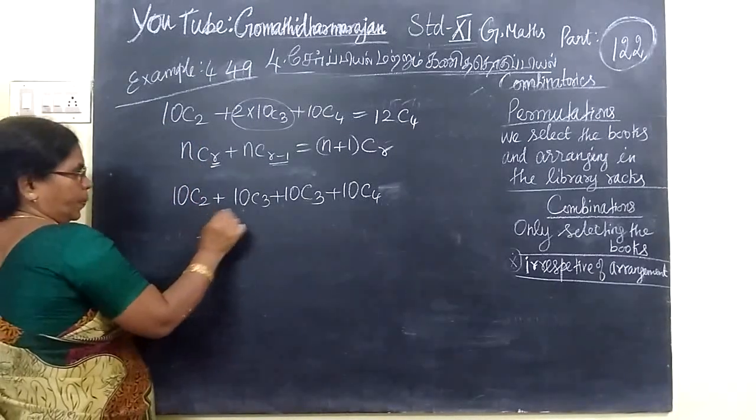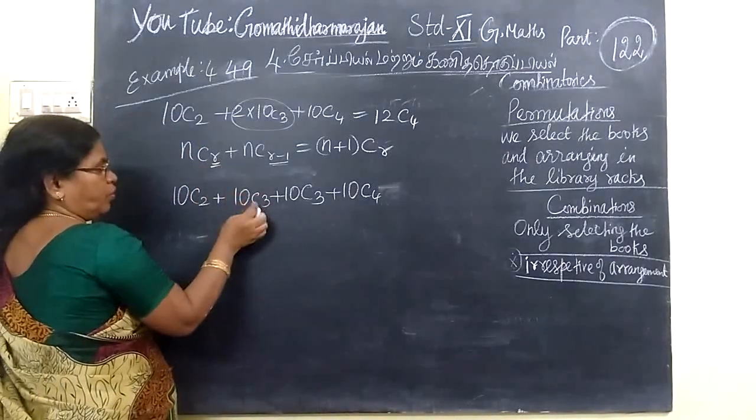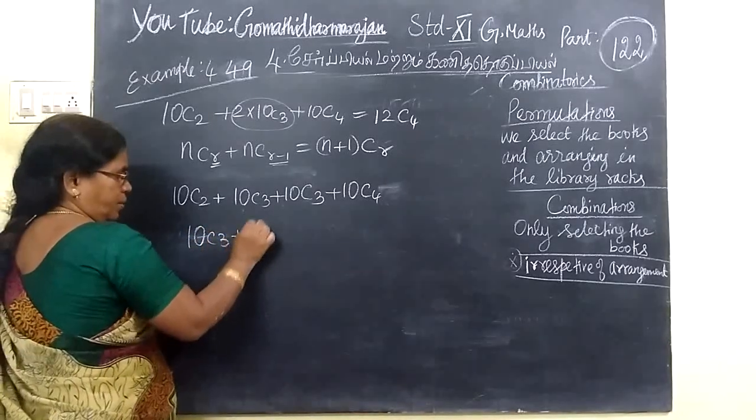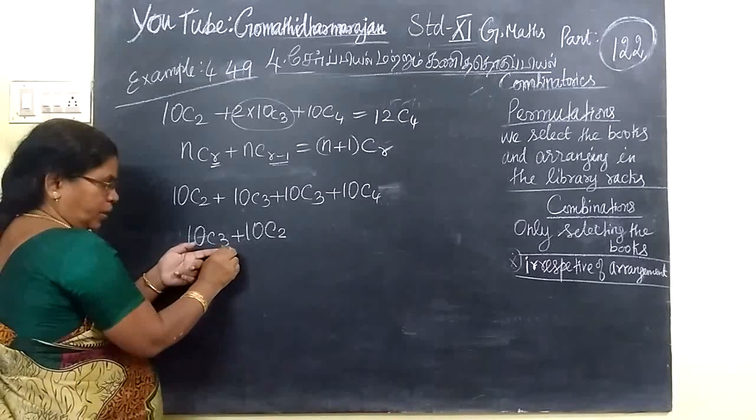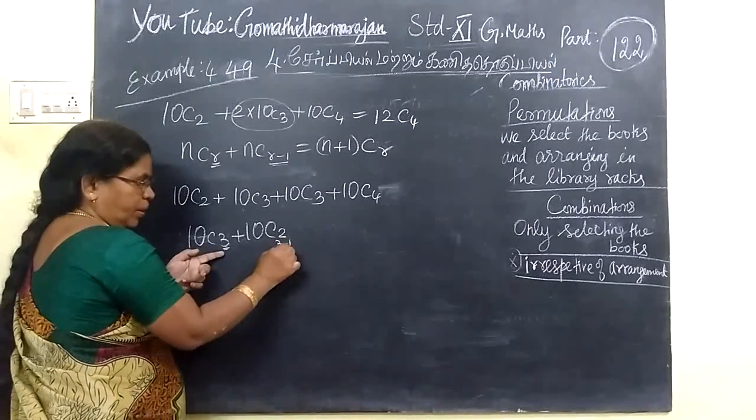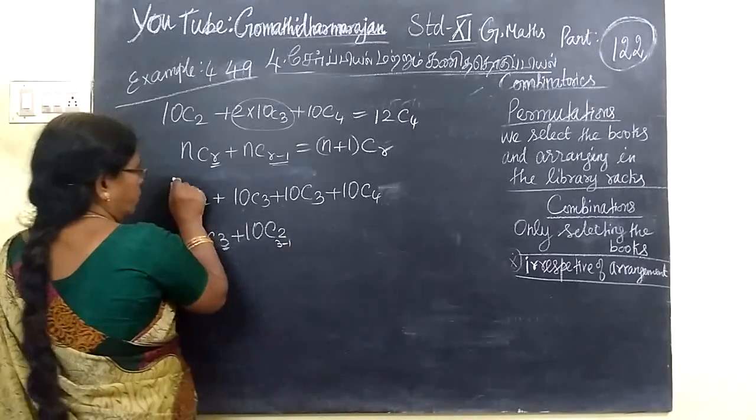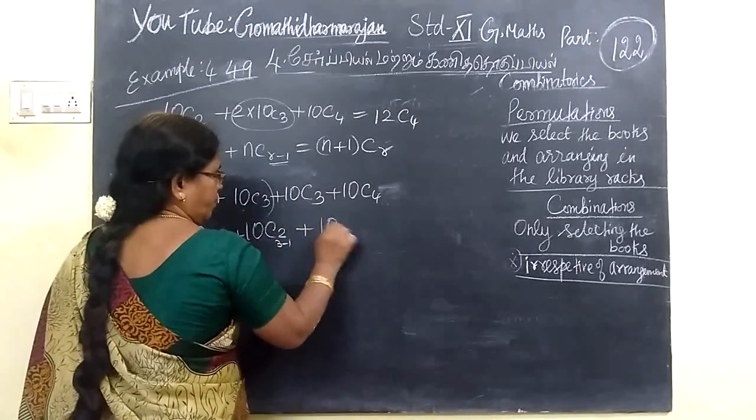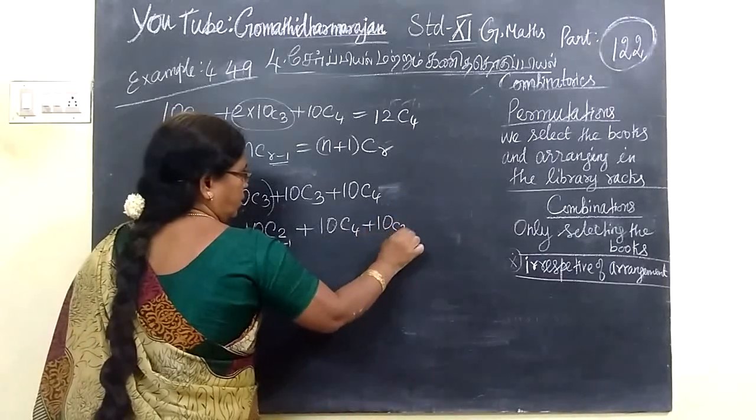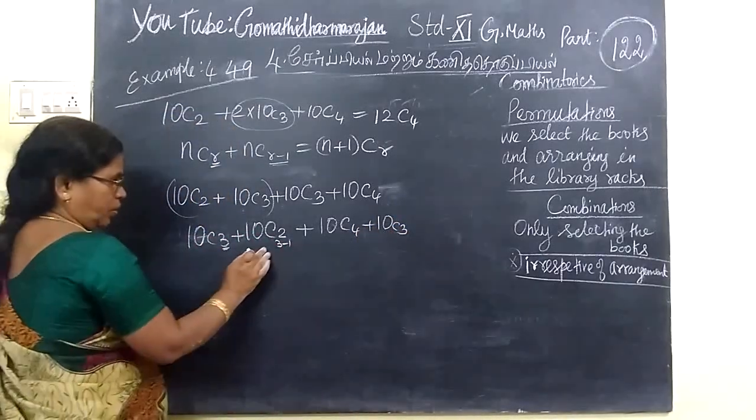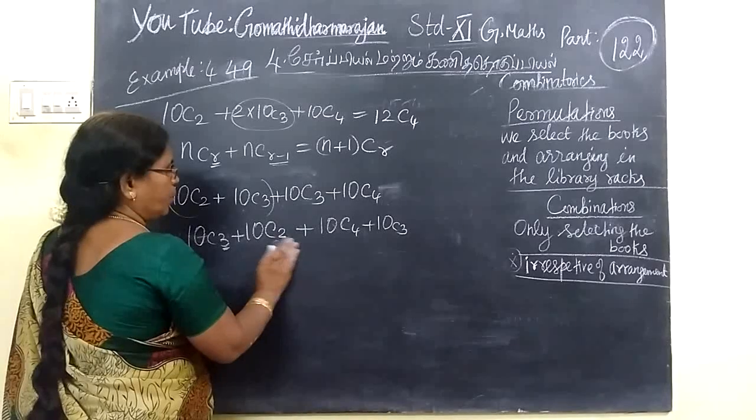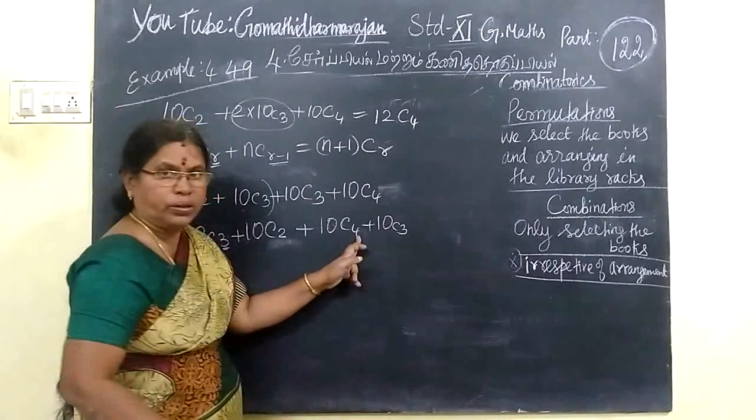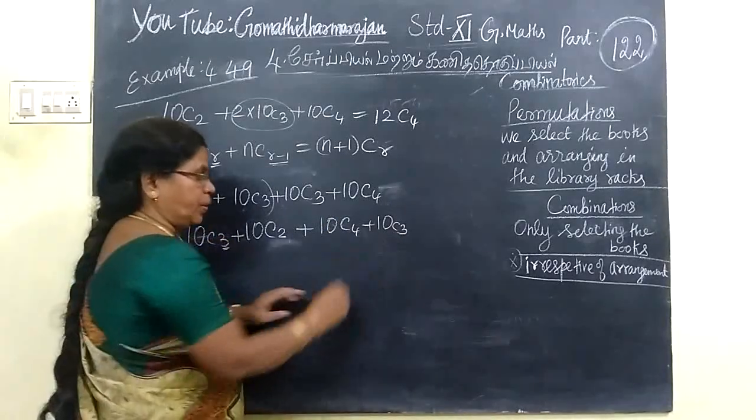When you write the answer, 10C3 plus 10C3 then 10C4. Then this formula when you write the answer: 10C3 plus 10C2, 3 is equal to 3-1, 2 is equal to 2. 10C4 is equal to 10C3.